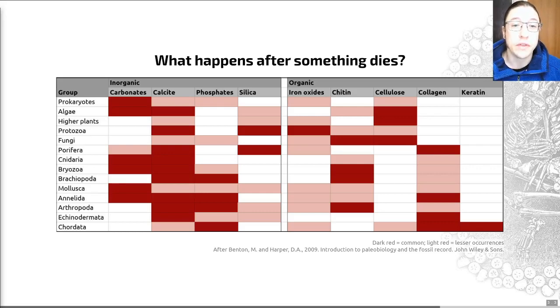Indeed, soft parts can leave their marks on hard parts. One example we'll be seeing over the course of this series of lectures is that mollusk shells have scars that show the location of muscles, and we can use those to understand their musculature or their mode of life.